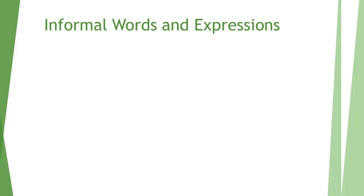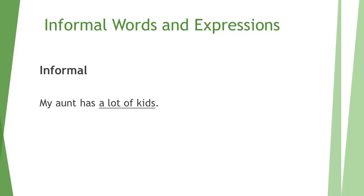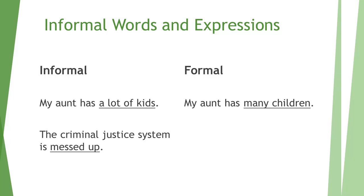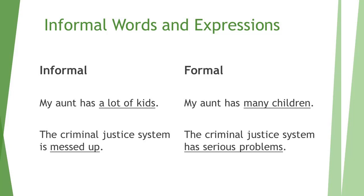Another type of language to avoid when using formal language is expressions — informal, conversational words you'd use when talking to a friend. For example, 'my aunt has a lot of kids' is very conversational. In a formal situation, you would say 'my aunt has many children.' Another example: 'the criminal justice system is messed up' is almost slang. A more specific, formal way to word that would be 'the criminal justice system has serious problems.'